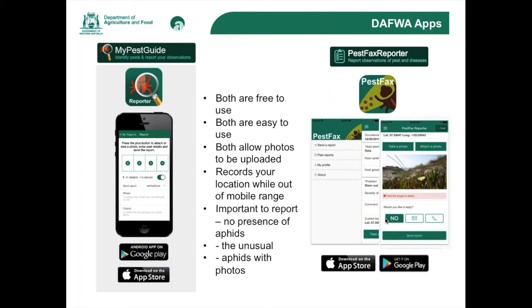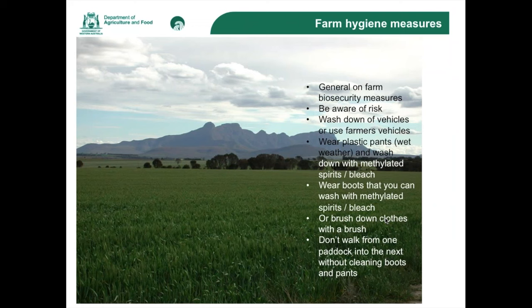The first way of reporting is those apps. Also importantly, there is the exotic plant pest hotline, which automatically goes to our Pest and Disease Information Service. Anybody can call that number, which is 1800 084 881, and there's always someone on the other end to talk to. Where samples do need to be sent, it's important to take measures to prevent spread of this aphid in case it is Russian wheat aphid — no double bagging, and certainly contact us first.